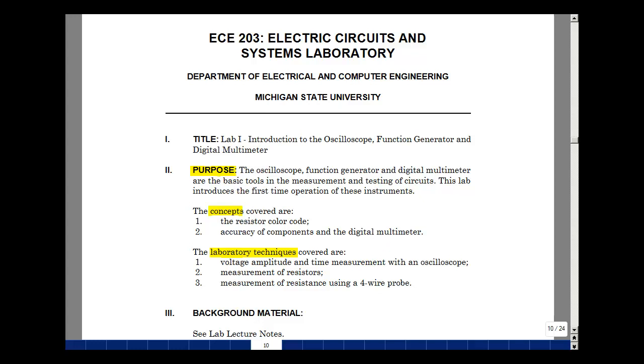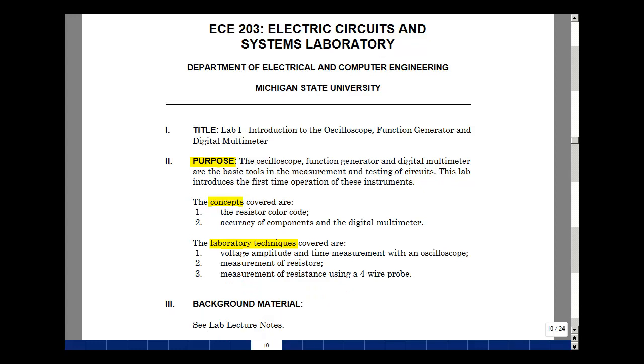What we'll see in the lab, we'll learn how to measure voltage amplitude and time with an oscilloscope. We'll measure resistors, and we'll measure resistance using a four-wire probe. When you come to the lab for the first time, there's going to be a quiz at the beginning of the period. It's going to cover these lab lecture notes, this video which explains those lecture notes, and then the lab itself. In other words, I can have you read through the lab experiment.